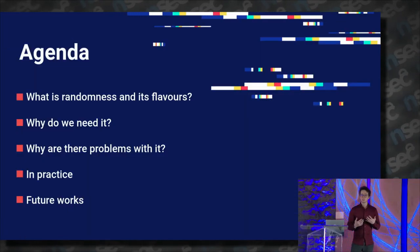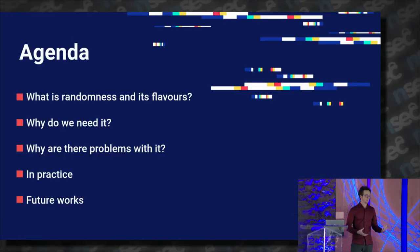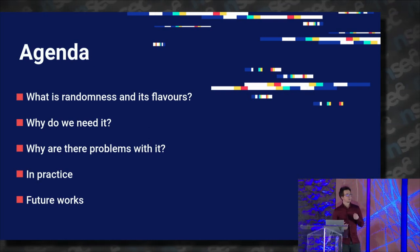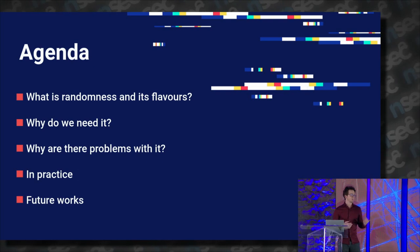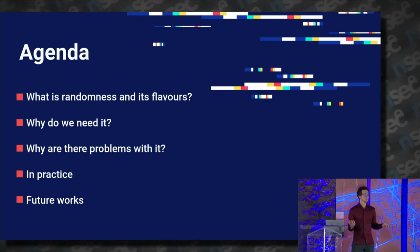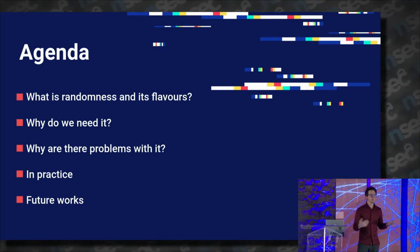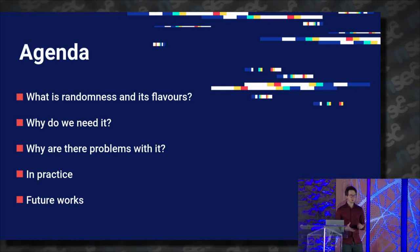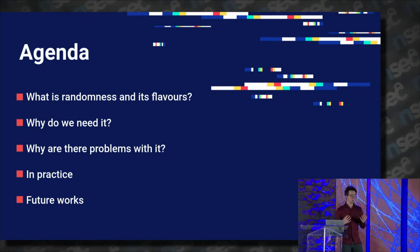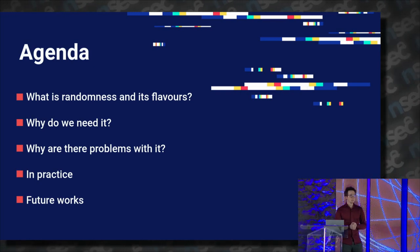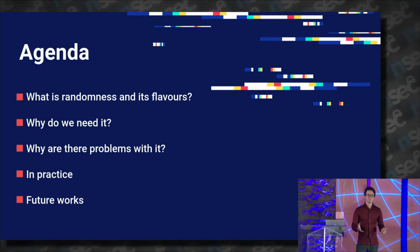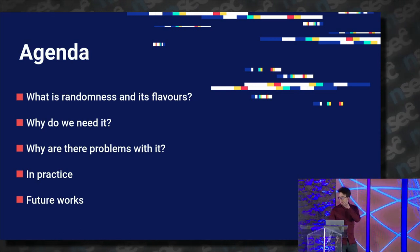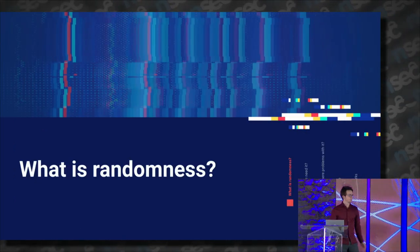Today we'll discuss what randomness is and its different flavors. Next we'll talk about why we need randomness, when we use it, and so on. We'll see what the problems with randomness are and why it's hard. And finally we'll see how we do good randomness in practice and what remains to be done.